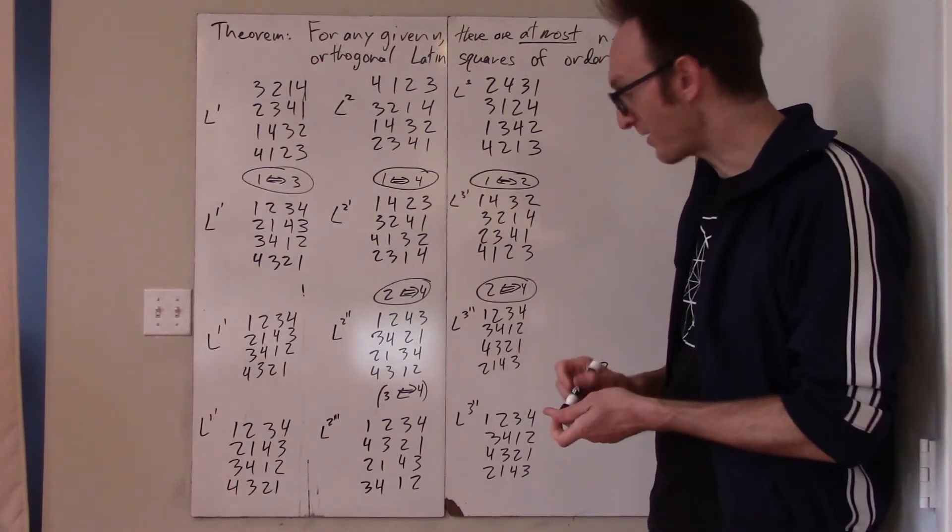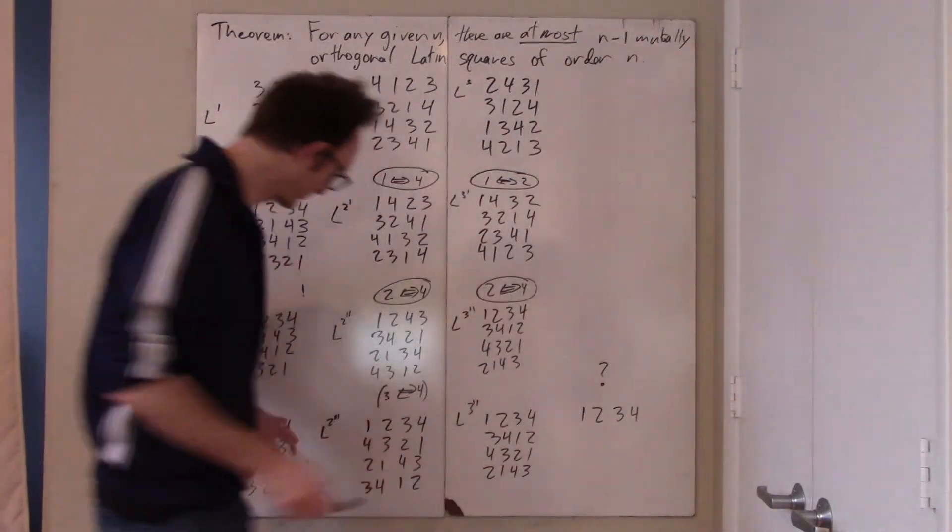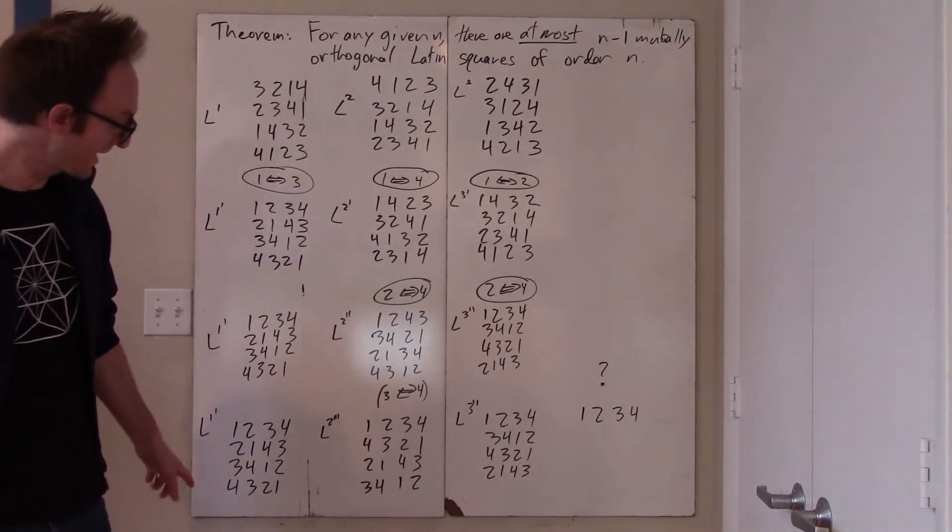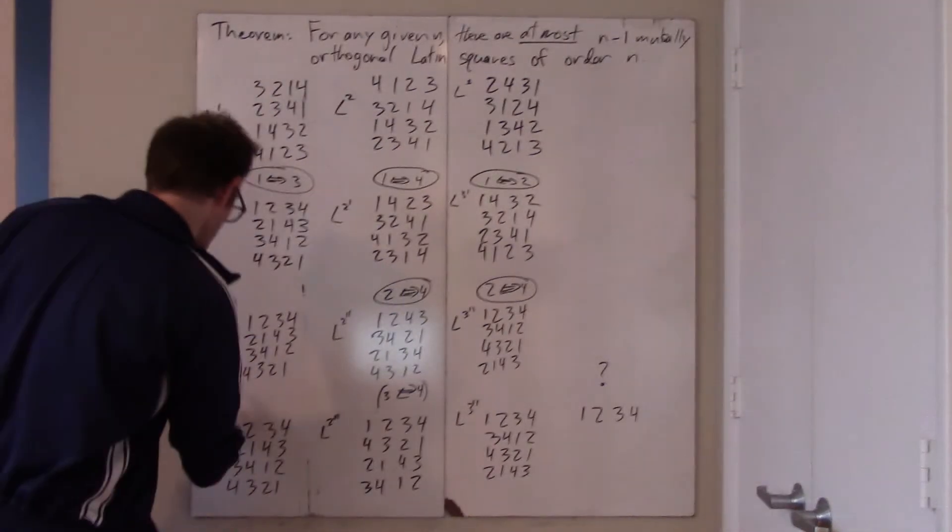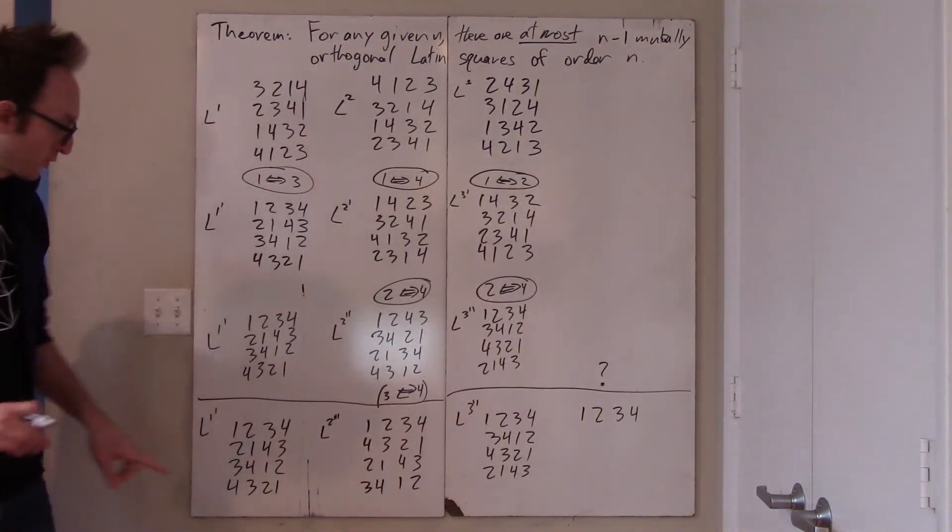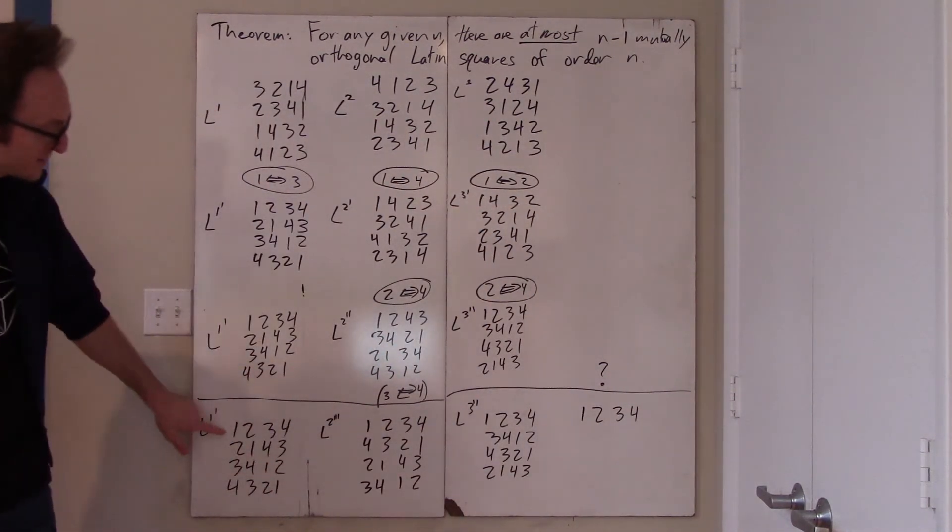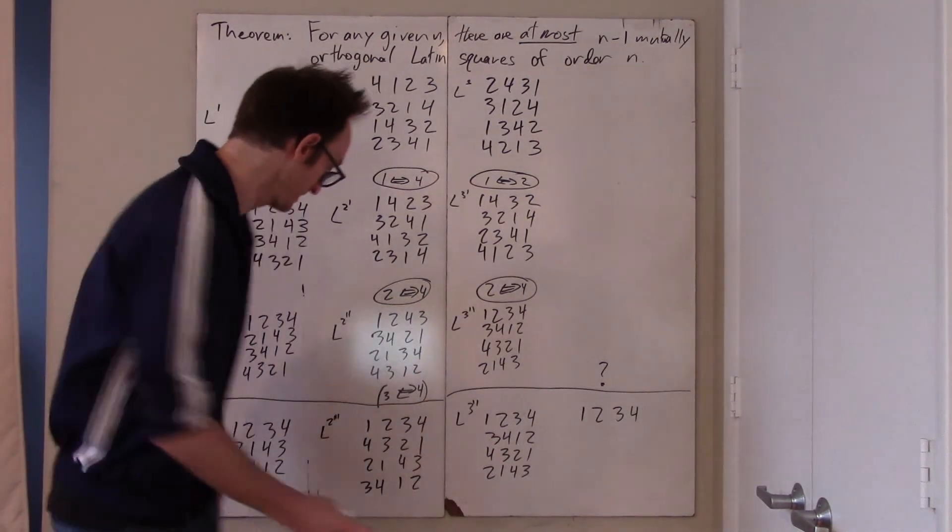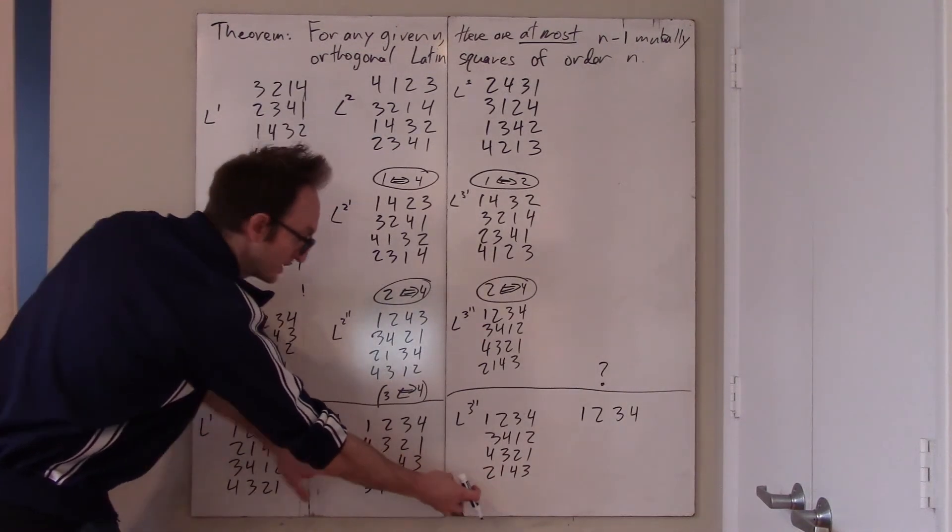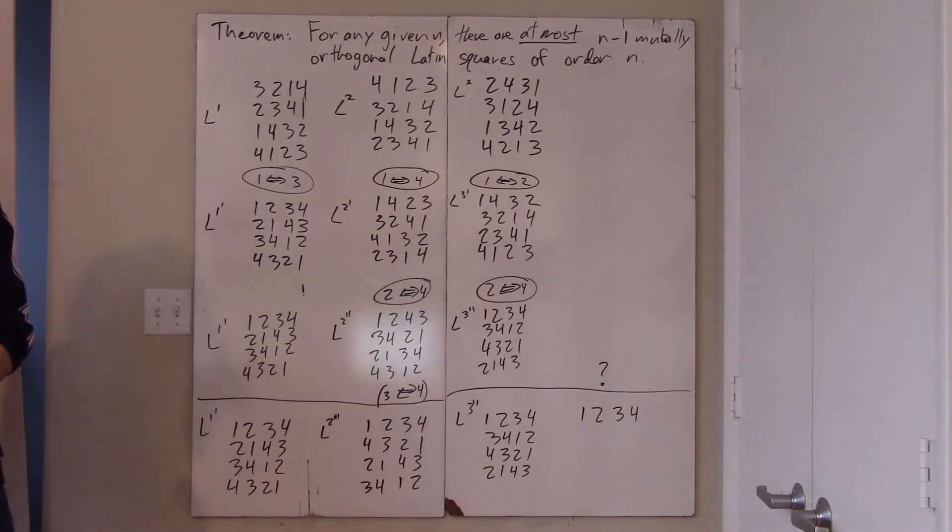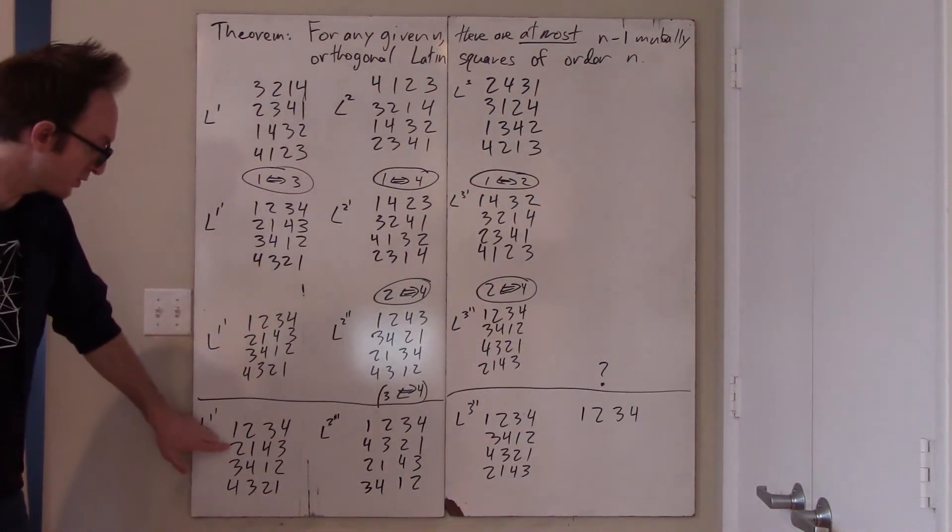Well, the answer is, you already have, by virtue of superimposing these Latin squares on top of each other, you've already, with respect to, let me just draw a line now, because these are the three Latin squares we're talking about. If you compare these two Latin squares, we've already used up ordered pair 1, 1, 2, 2, 3, 3, and 4, 4. And also when these two get superimposed, and when these two get superimposed, the fact that the first row is 1, 2, 3, 4 means that we've already used up ordered pairs 1, 1, 2, 2, 3, 3, 4, 4.